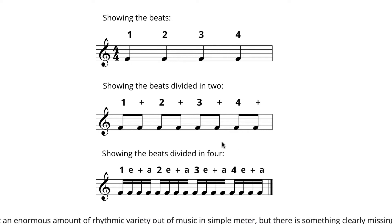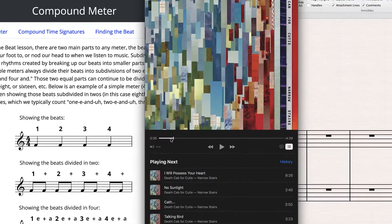But there's a little bit of a problem here, and that is I can divide in 2, and then I go right to dividing in 4. But what do we do when we get music that uses 3 parts for each beat instead of 2 or 4?